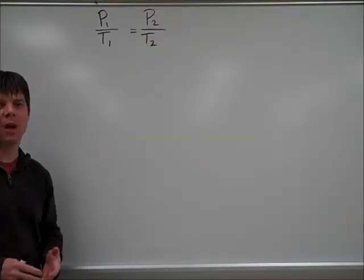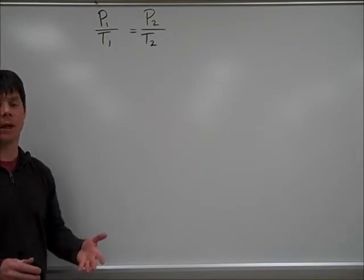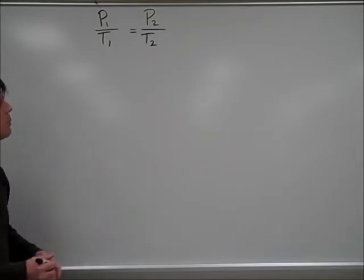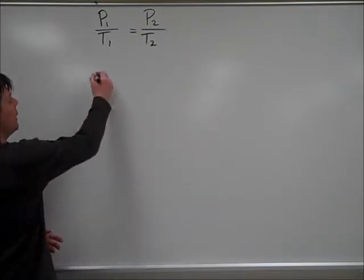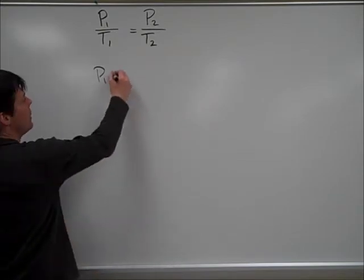Our first step in problem solving is always going to be to identify the known and unknown variables in our problem. As we read the problem, we can look up and know the starting pressure, P1, is equal to 105 kilopascals.